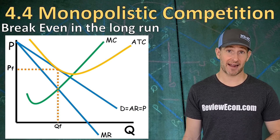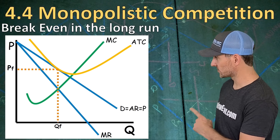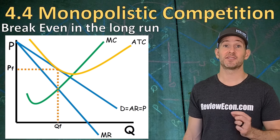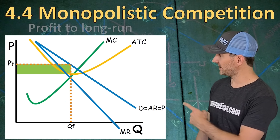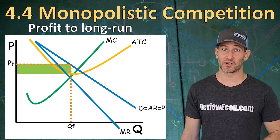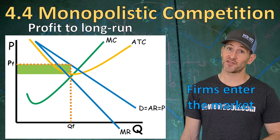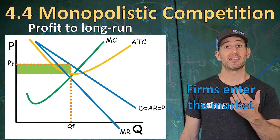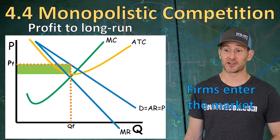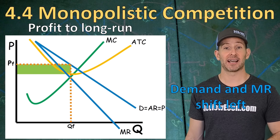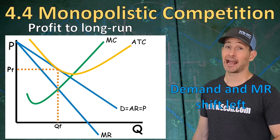In long run equilibrium, the price is equal to the average total cost, and this firm is breaking even. This is a monopolistically competitive firm in long run equilibrium. This firm is earning economic profits in the short run, but in the long run firms are going to enter the market, meaning each firm left will have a smaller piece of the market. That demand curve and marginal revenue curve are going to shift to the left until there is no more economic profit, and we are back at long run equilibrium.